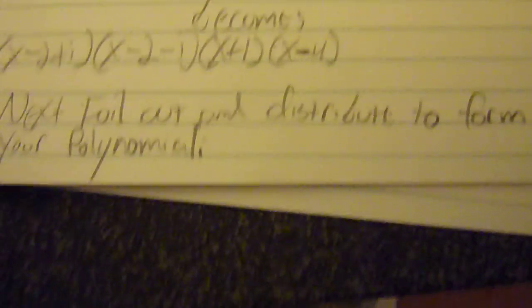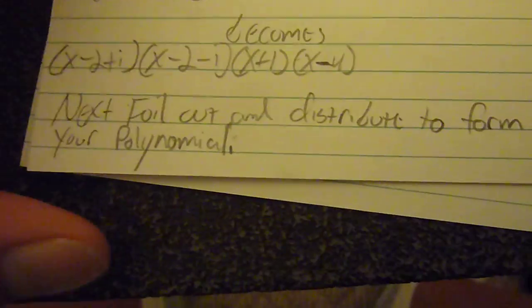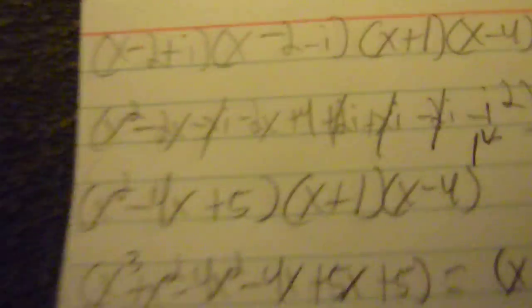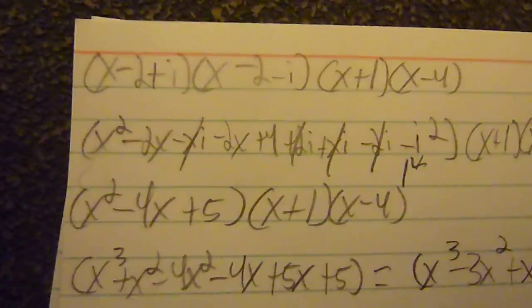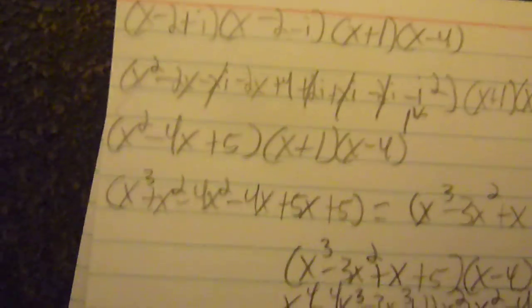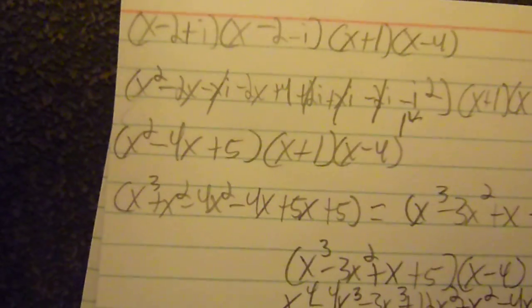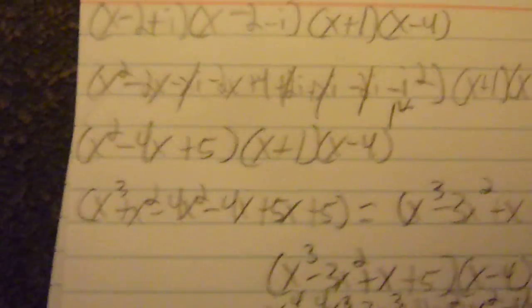And then next after that, you're going to FOIL out and distribute to form your polynomial. Just to make it easier on yourself, you're going to do the ones with the complex first. It's just easier in my opinion.